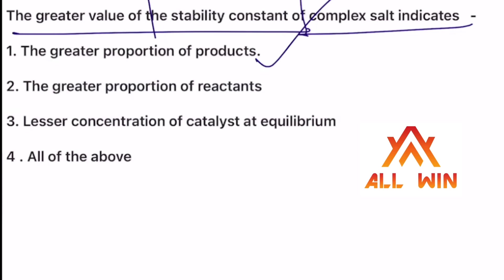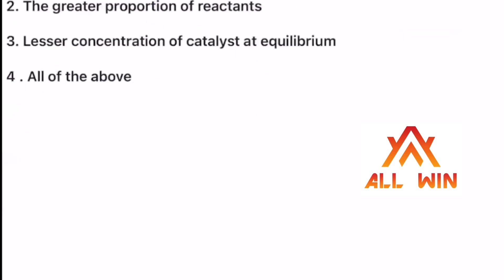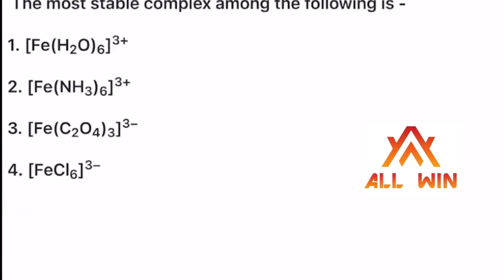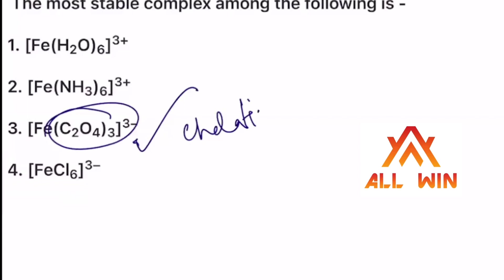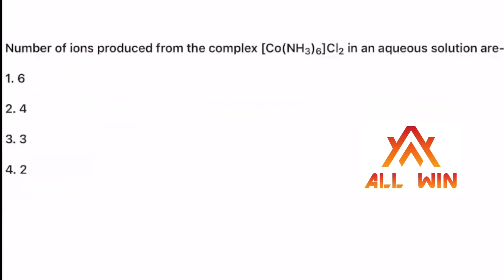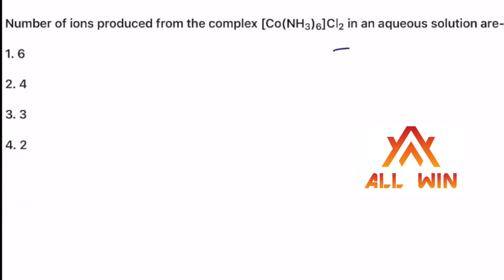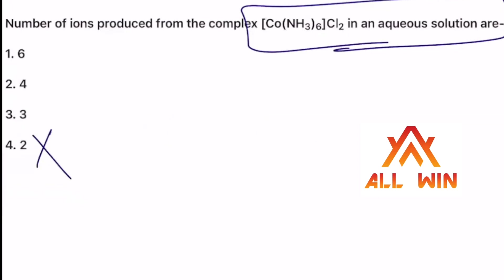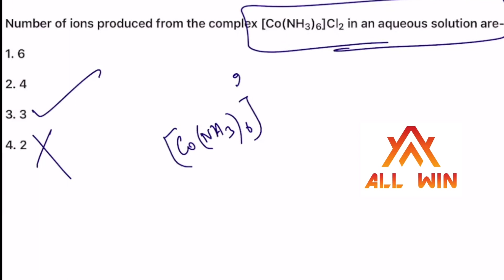What is the most stable complex among the following? Number of ions produced from the complex Co(NH3)6Cl2 in aqueous solution — three, three, four, four. Three Cl minus plus two Cl minus, one complex.